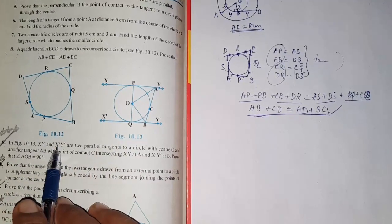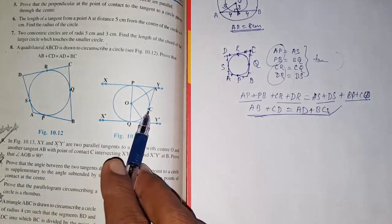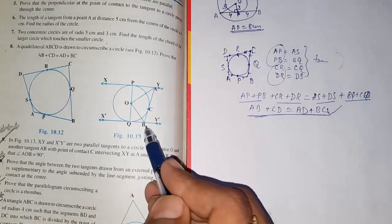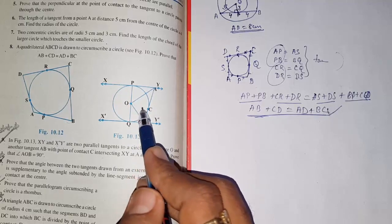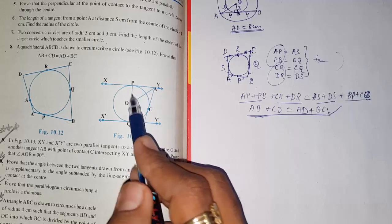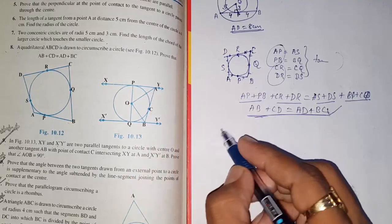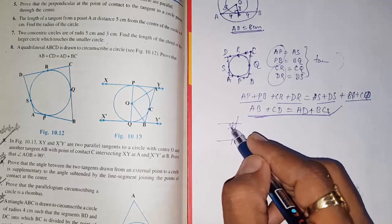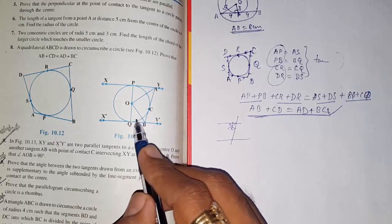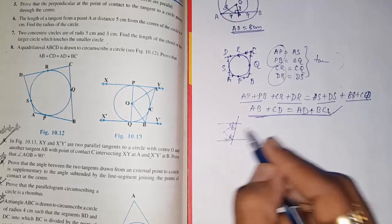Moving to Question 9: XY and X'Y' are two parallel tangents with center O. Another tangent AB with point of contact C intersects XY at A and X'Y' at B. Prove that angle AOB equals 90 degrees. To prove this, first join O to C, then make two triangles congruent using RHS, as in Theorem 10.2. Making these congruent, name the angles X and X as equal by CPCT.